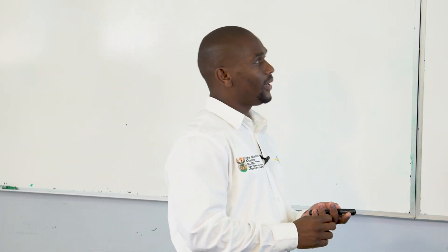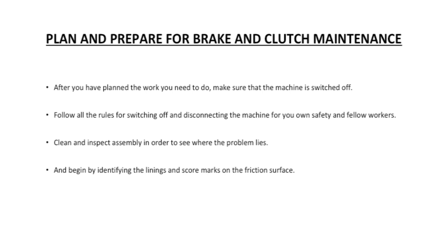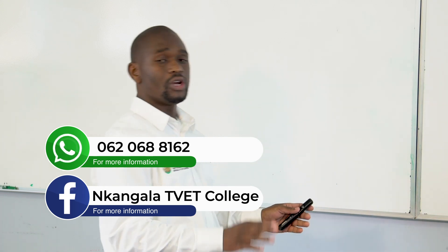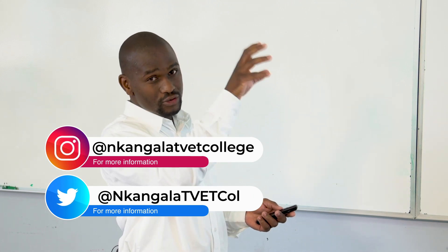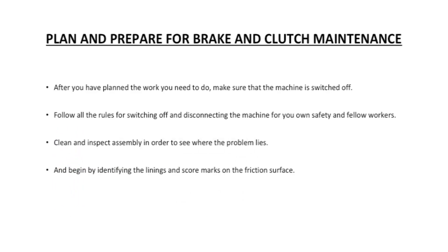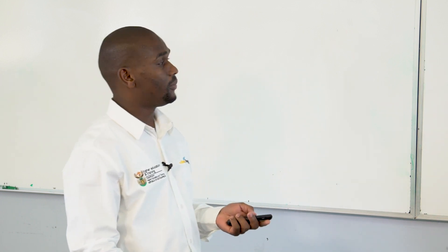Planning and preparing for brake and clutch maintenance: after you have planned the work, make sure that the machine is switched off before doing any maintenance on brakes and clutches — switched off from the main power source. Follow all lockout/tagout procedures and disconnect the machine for your own safety and fellow workers. Clean and inspect the assembly in order to see where the problem lies, and begin by identifying linings and scour marks on the friction surface.